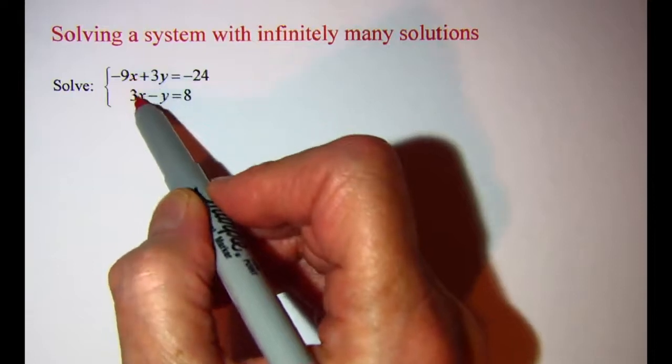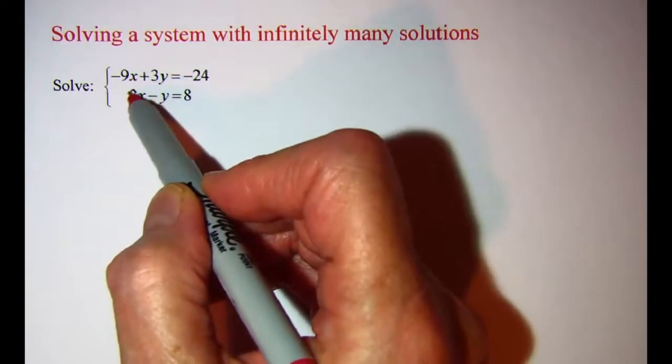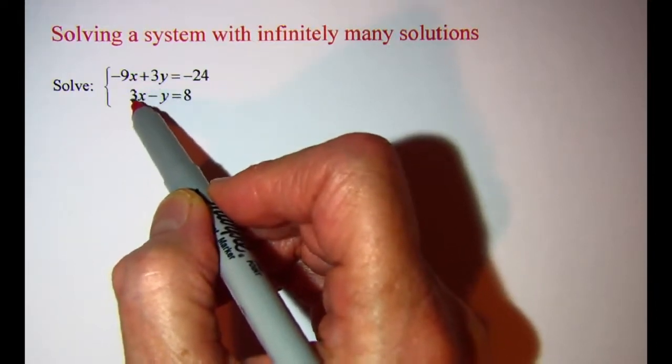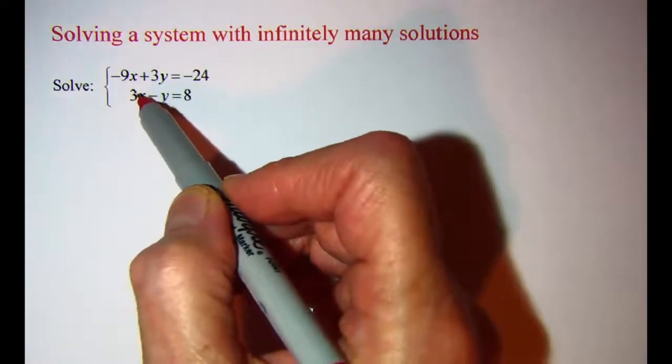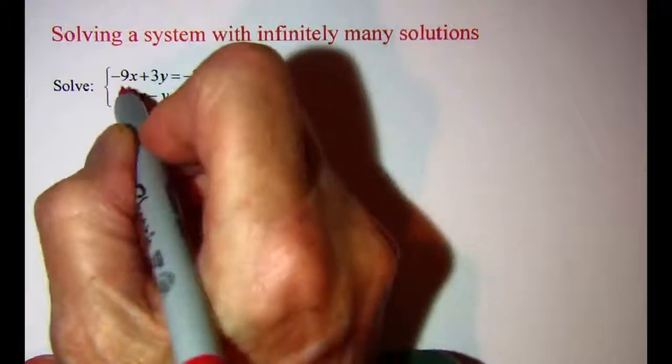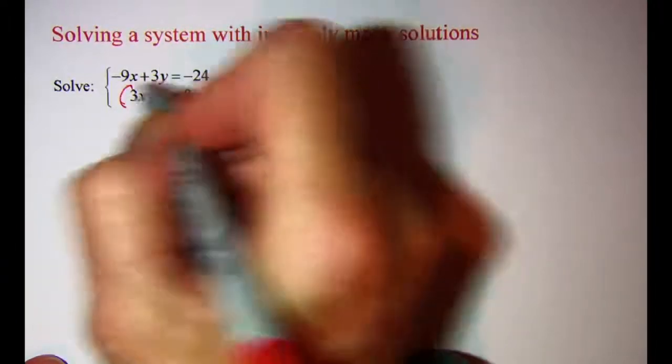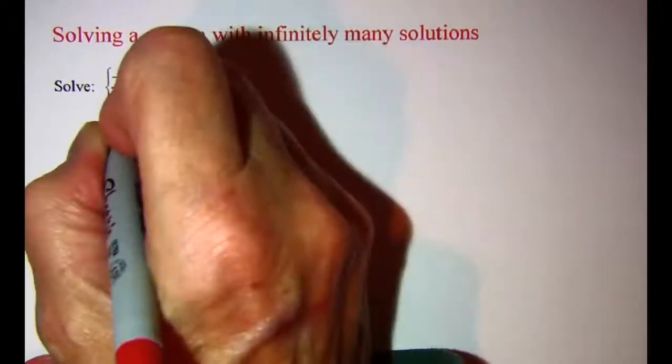Now let's use elimination. I'm going to go ahead and change this coefficient to 9, positive 9, and then when we add these, it should be eliminated. And to get that, I would multiply both sides of the equation by 3.